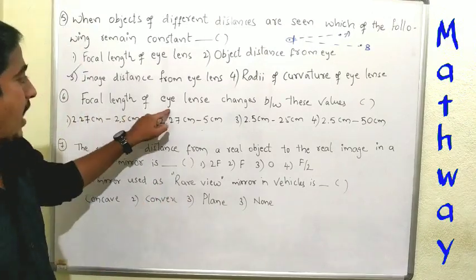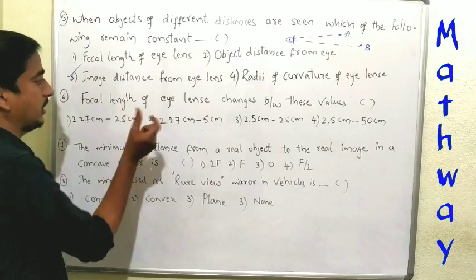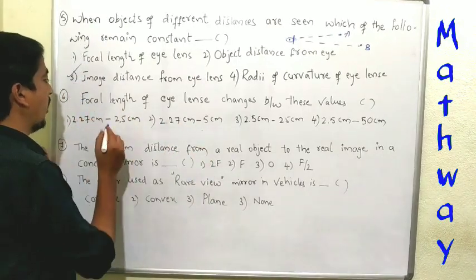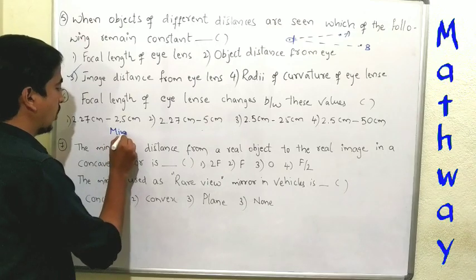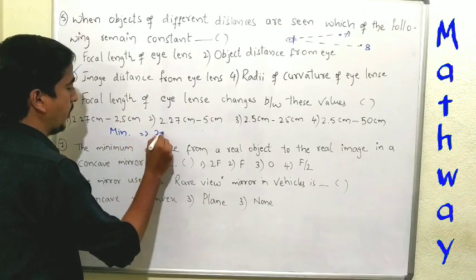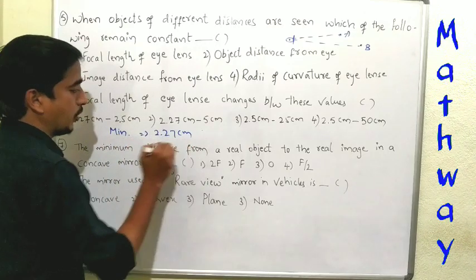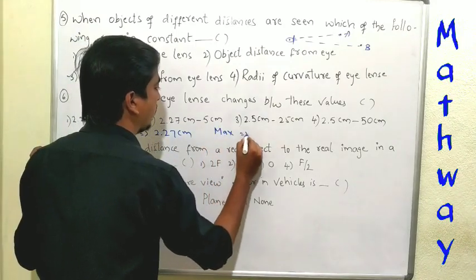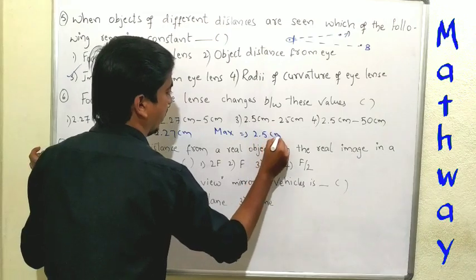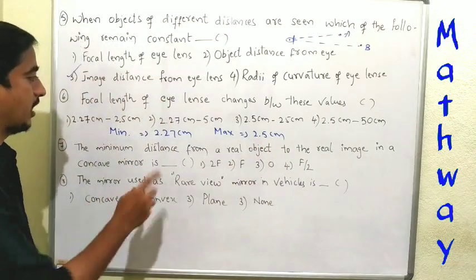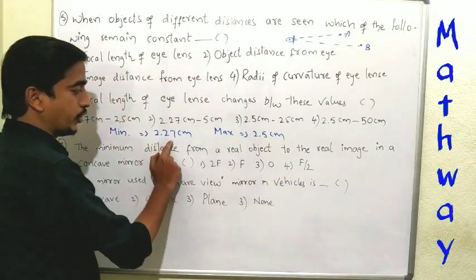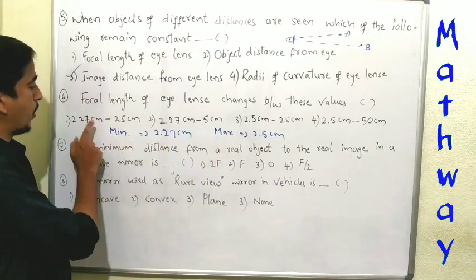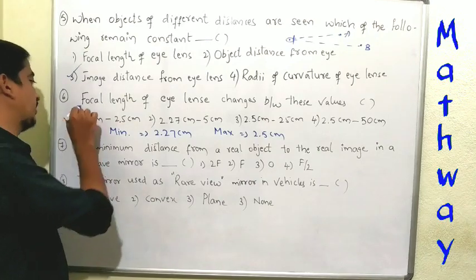Sixth question: the focal length of the eye lens changes between these values. The minimum value of focal length is 2.27 cm and the maximum value of focal length is 2.5 cm. So it lies between 2.27 to 2.5. Option one is correct.